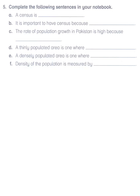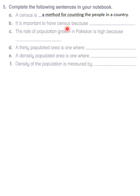Now we move to fill in the blanks. These require short phrases, not just single words. A census is a method for counting the people living in a country. It is important to have a census because it gives information to the government for planning.